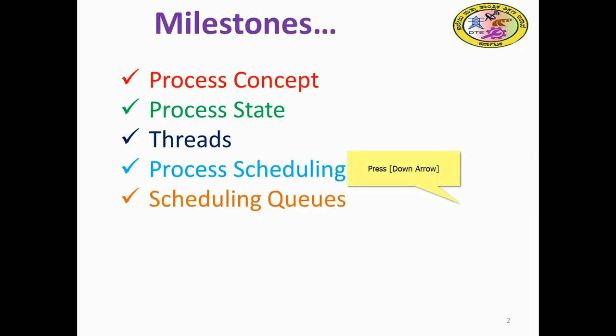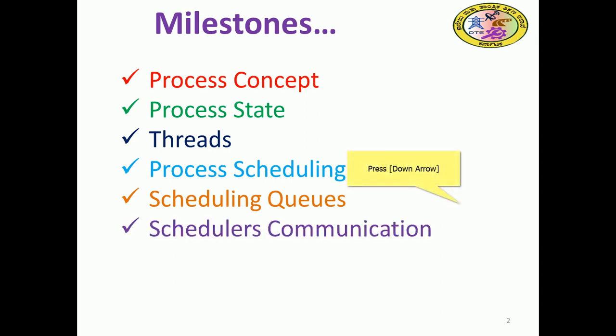We will also look at scheduling queues, which may be implemented as linked lists or other data structures to organize queues for process scheduling. Scheduler communications will also be discussed. Communication is established for different scheduling types: long-term scheduler, which is job scheduling; short-term scheduler, which is CPU scheduling; and medium-term scheduling, which covers I/O scheduling.